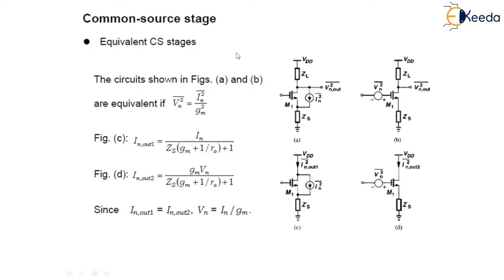Since the circuits have equal output impedance, we simply examine the output short circuit current as shown in figure C and D. Here, what we have done? We have used the current source Im squared and here we have used the noise voltage source at the gate terminal. And similarly, in this equation also,